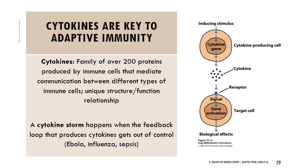Cytokines are a family of proteins produced by many different immune cells, important for communication between immune cell types. When cytokines get out of control — in a positive feedback loop — that's called a cytokine storm, which can be very dangerous given how many intense signaling processes cytokines are involved in. This happens in severe cases of the flu, as well as Ebola and sepsis.